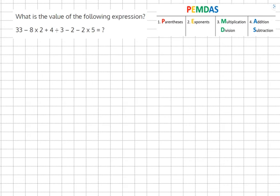What is the value of the following expression? 33 minus 8 times 2 plus 4 divided by 3 minus 2 minus 2 times 5.